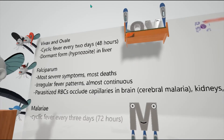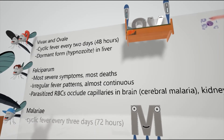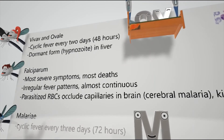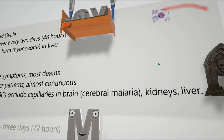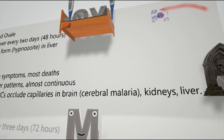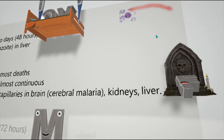Then we have the falciparum form, represented by the next mosquito. This is the most severe type with the most deaths associated with it. It causes irregular fever patterns that are almost continuous — generally every 24 hours or over 48 hours. Parasitized red blood cells occlude capillaries in the brain, causing cerebral malaria. This happens because falciparum generates a sticky protein that coats the surface of red blood cells, making them stick together.